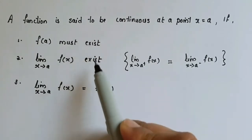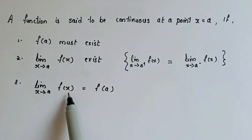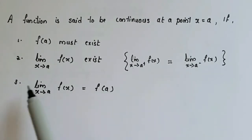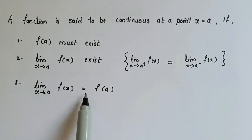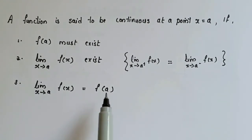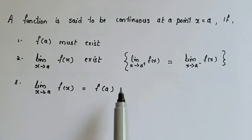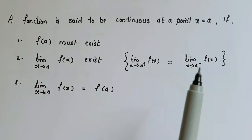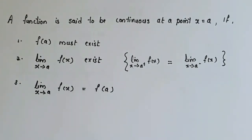If we have those two conditions met, then we must also ensure that limit x tends to a of f of x equals f of a. This is the third condition — as x gets closer and closer to a, f of x gets closer and closer to f of a. These are the three conditions that must be satisfied for a function to be continuous at a point. If any condition fails, the function is discontinuous.